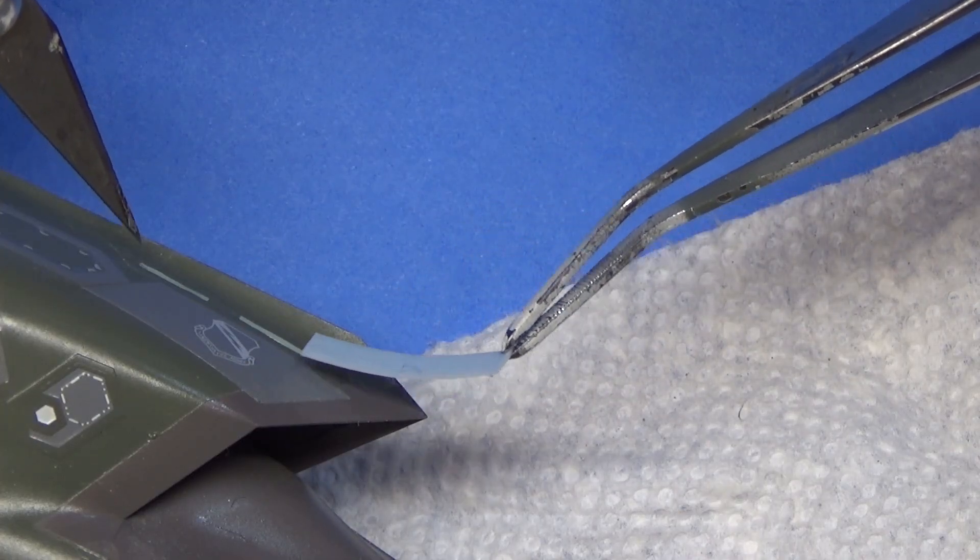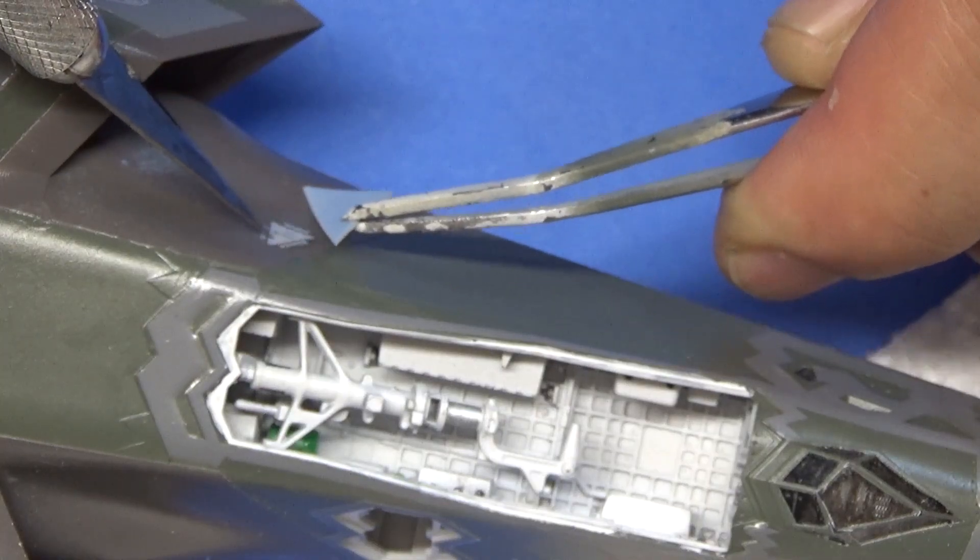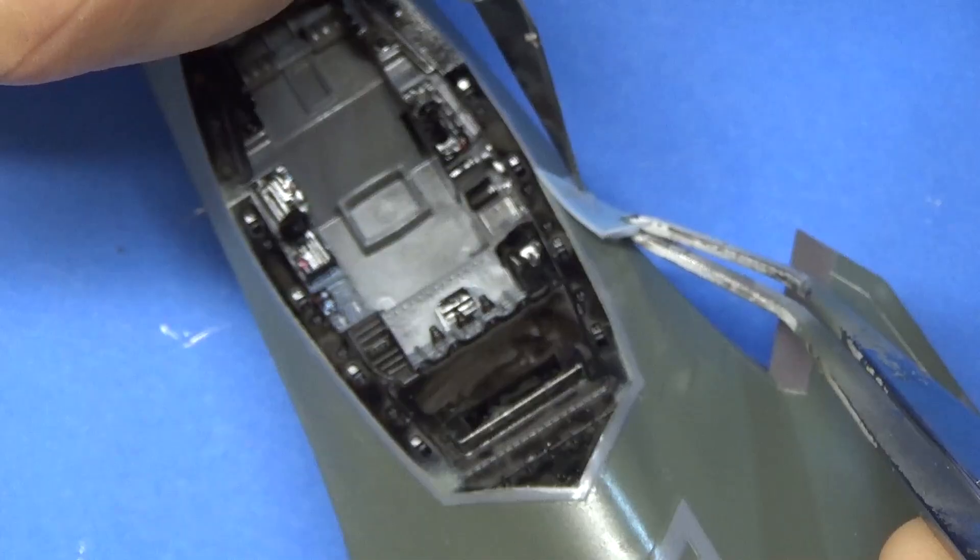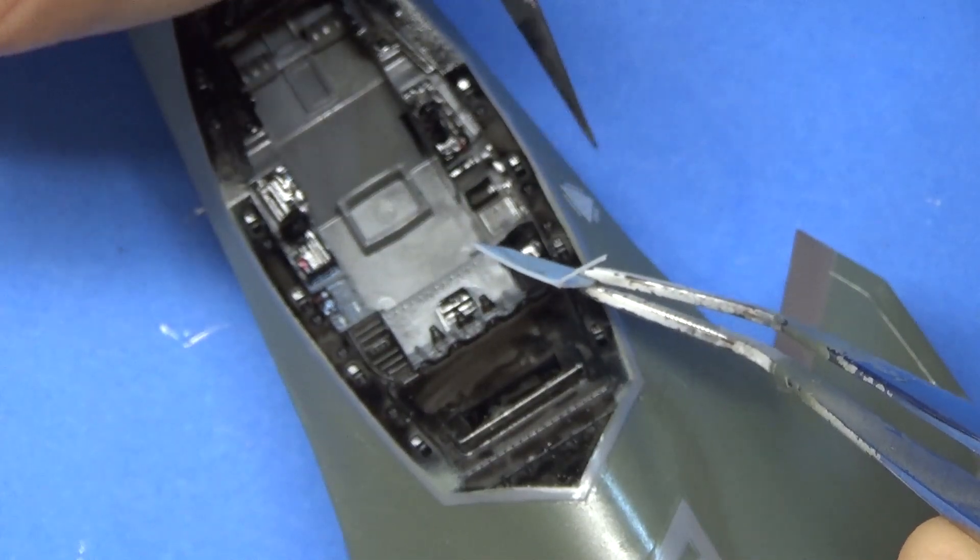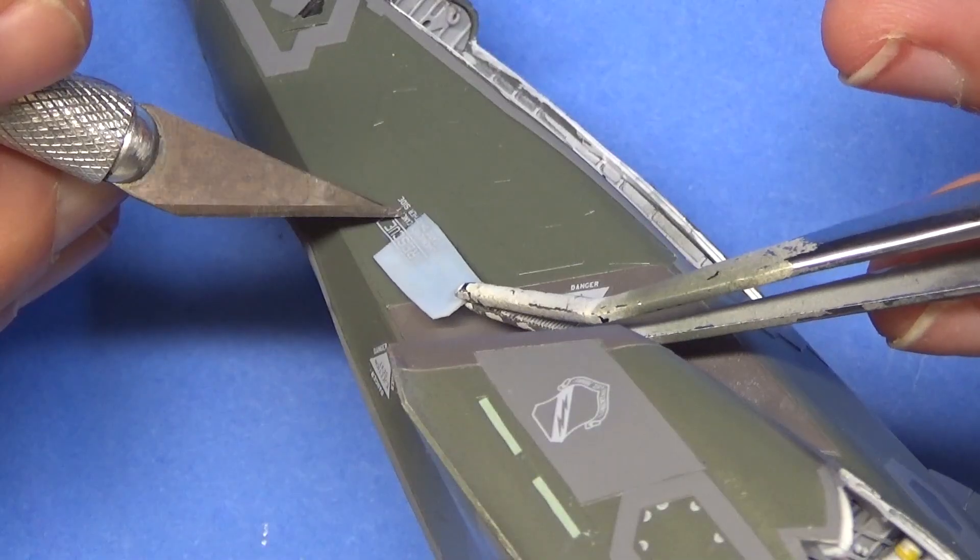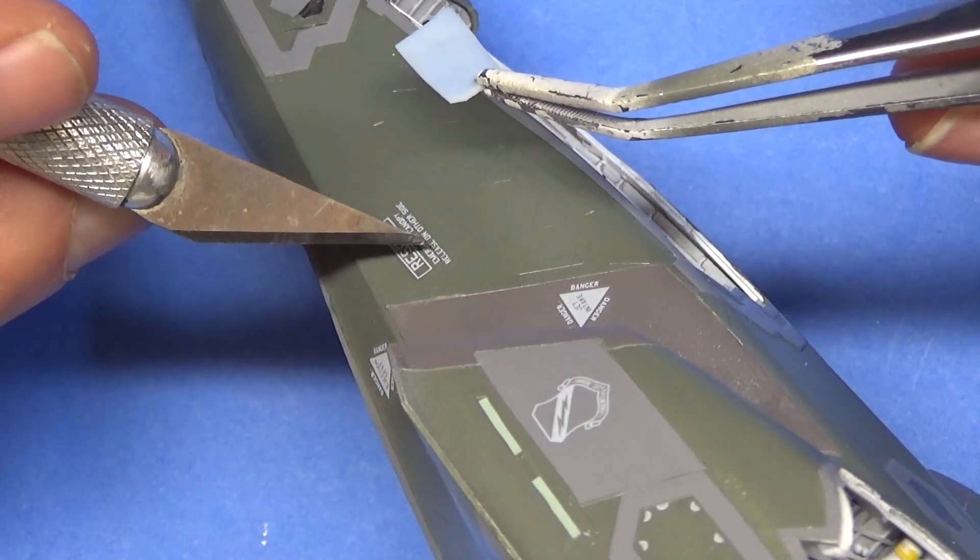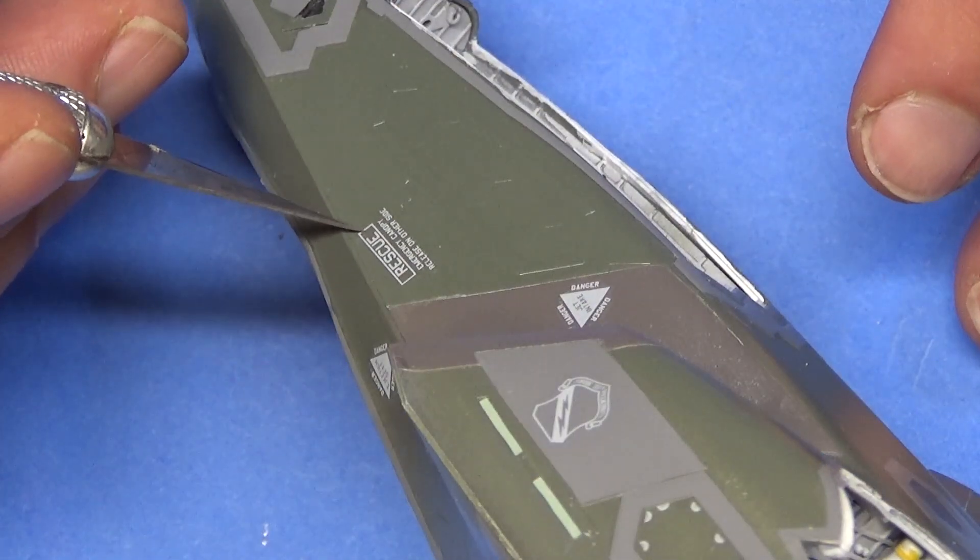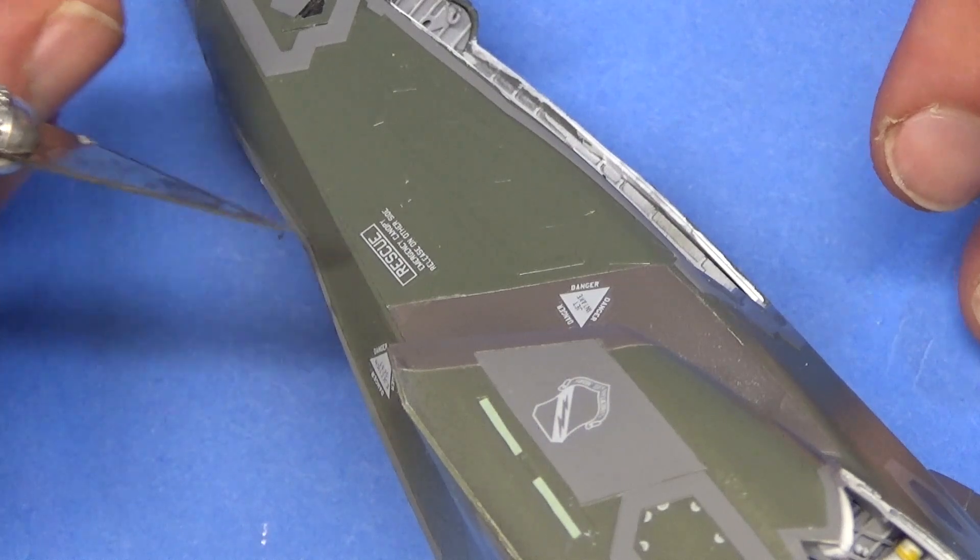Just make sure the orientation is correct. It's very difficult to tell which way it goes. Just be careful with it. Got some little danger symbols right here for your intakes. This goes by the front there. Then you've got your rescue latches, things like that.